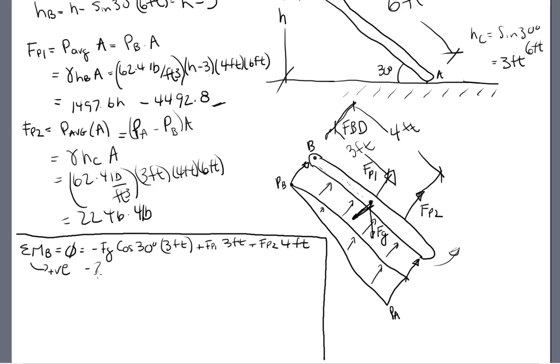So now, we're going to sub in negative 8,000 pounds cos 30 degrees times 3 feet, plus 14976H minus 4492.8, all that times 3 feet, and then plus 2246.4 pounds times 4 feet. And when you do the exercise to solve for H, you will find that H equals 5.62 feet.